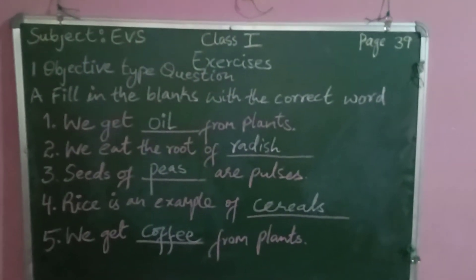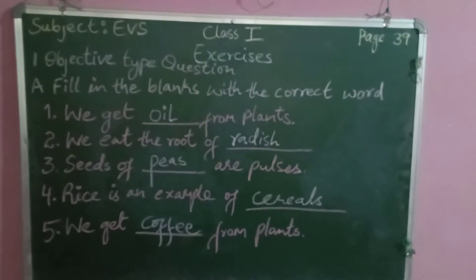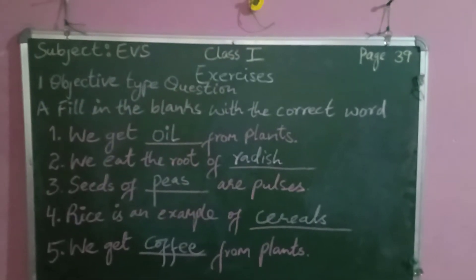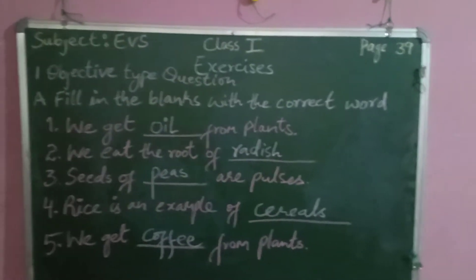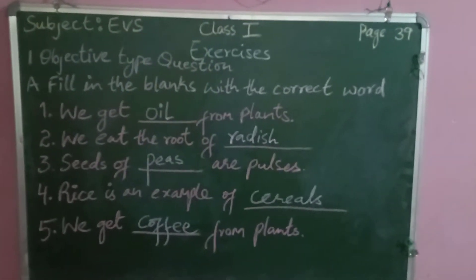We get dash from plants. We have two options here: oil and milk. The correct answer will be oil — we get oil from plants.